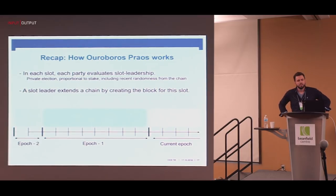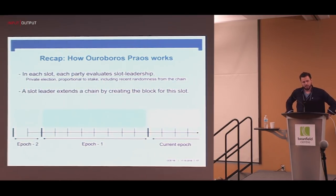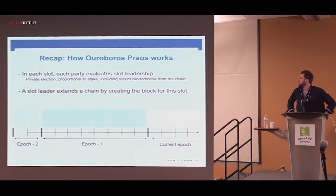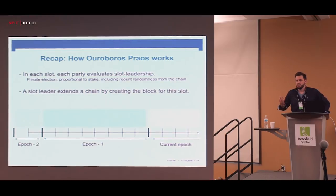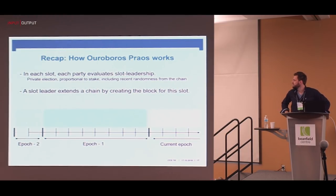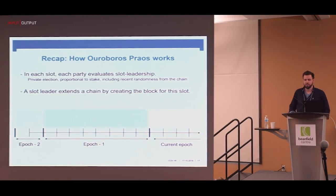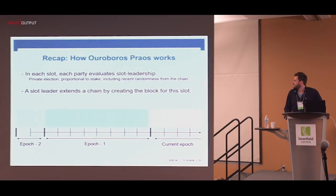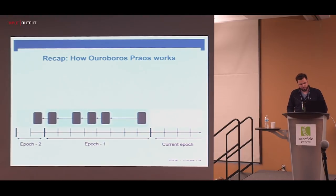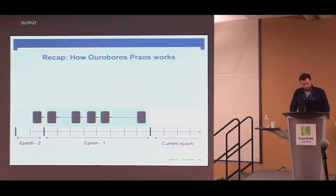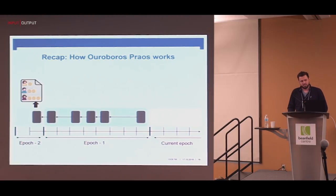In broad terms, in Ouroboros Praos, in each slot we have a leader election process. This is a private election — everybody does it on its own and it's proportional to stake, so if somebody has a lot of stake they're more likely to be elected as leader. The leader election is fed with fresh randomness directly from the chain to ensure freshness of these elections. The task of a slot leader is just to create a block for that slot and extend a chain it knows. Parties have to agree on the stake distribution according to which leaders should be sampled, and this is taken from the last block in epoch minus two.